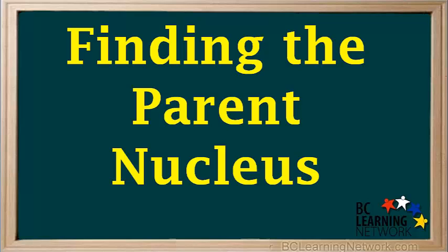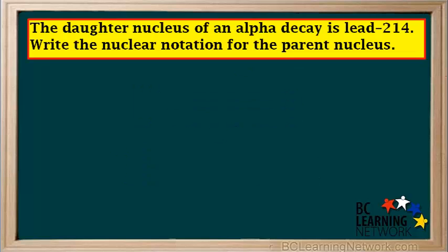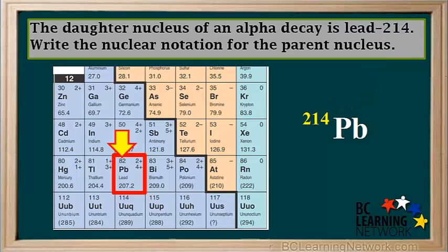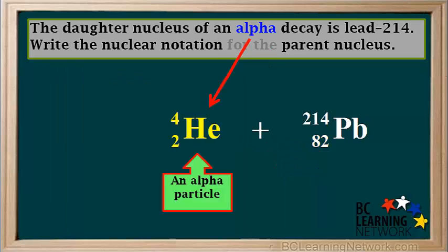In some cases, you may be given the daughter nucleus for an alpha decay and asked to find the parent nucleus. For example: the daughter nucleus of an alpha decay is lead-214. Write the nuclear notation for the parent nucleus. We'll write the products first. The symbol for lead is Pb. The 214 in lead-214 means that 214 is the mass number of the isotope, so we write 214 on the top left. Locating lead on the periodic table, it is element number 82, which means it has 82 protons and a nuclear charge of positive 82, so we write 82 on the bottom left. Because this is an alpha decay, the other product must be an alpha particle, written as a helium-4 nucleus.